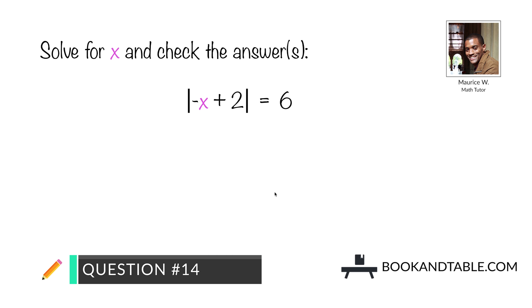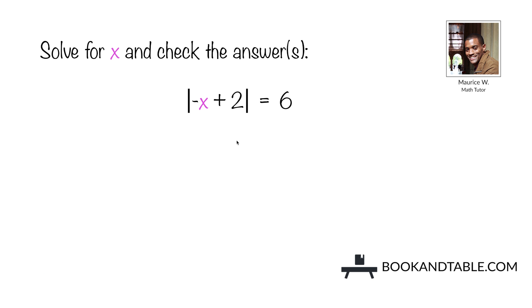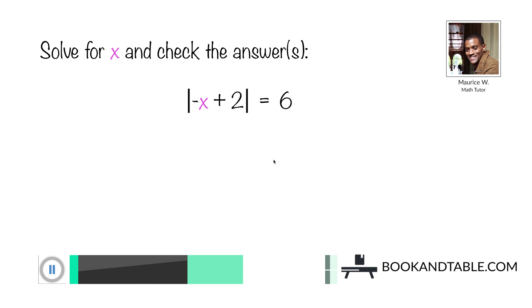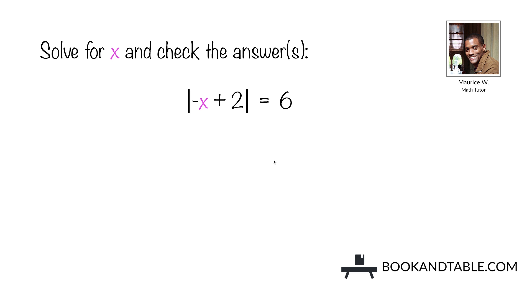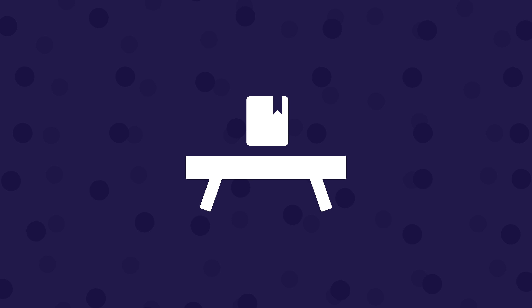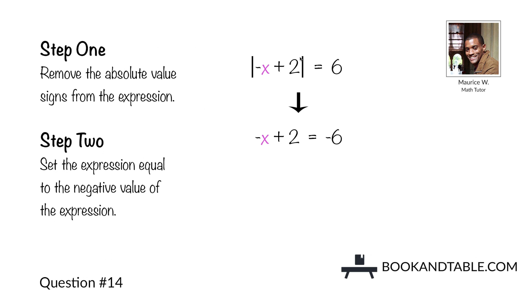Question number fourteen: now we introduce absolute values. Solve for x and check the answers. The absolute value of negative x plus 2 is equal to 6. Step one: remove the absolute value signs from the expression, leaving you with negative x plus 2. Since the expression inside the absolute value signs can be negative or positive, we first solve for the possible negative value. Step two: take our positive 6 and make it negative. So we have negative x plus 2 is equal to negative 6.